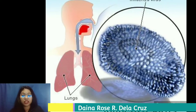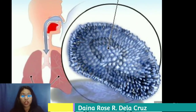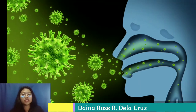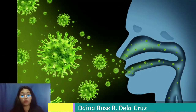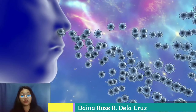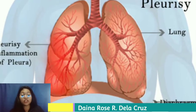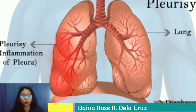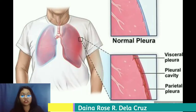Influenza is a viral infection that attacks the respiratory system — your nose, throat, and lungs. Commonly called the flu, it is not the same as stomach flu viruses that cause diarrhea and vomiting. Pleurisy is a condition in which the pleura, a membrane consisting of layers of tissue lining the inner chest cavity and surrounding the lungs, becomes inflamed.